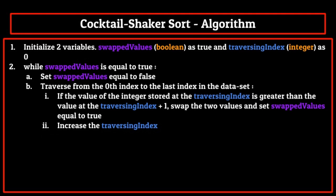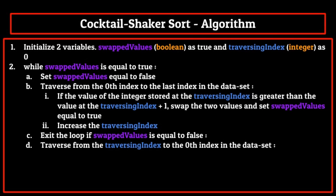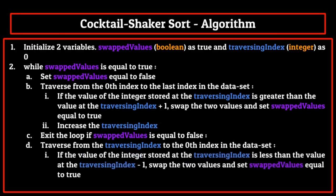First, however, for step c, we exit the loop if swapped values is equal to false, because if swapped values is false we know the list is sorted and can exit the algorithm. If not, we need to travel back down the list and swap additional values. So we set up a second loop which traverses from the last index to the zeroth index. Then we enter step i, like from the first traversing loop — only this time we ask if the value at the traversing index is less than the value at the traversing index minus 1. This is simply the reverse of the statement from the first traversing loop.